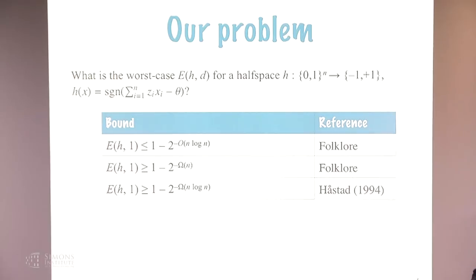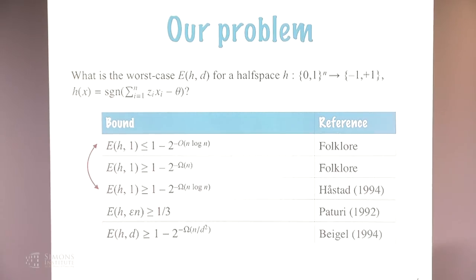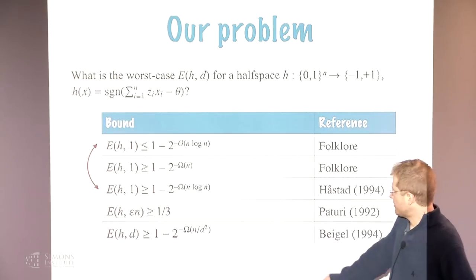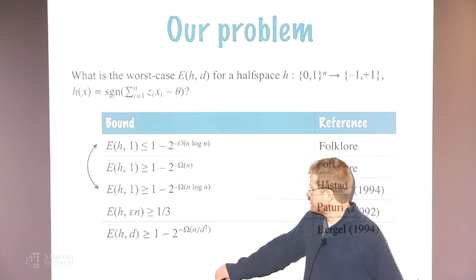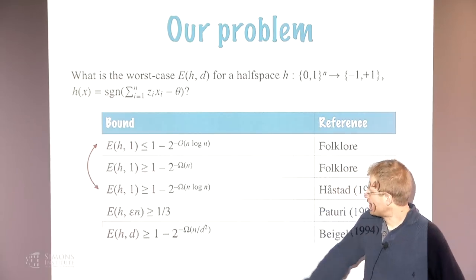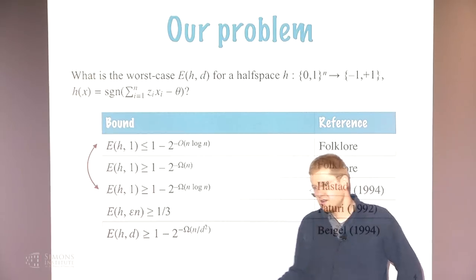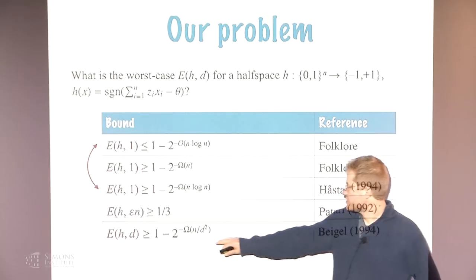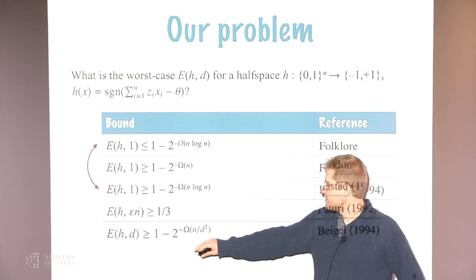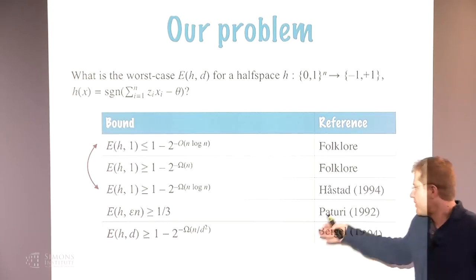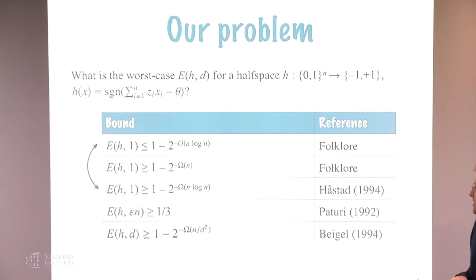This is essentially tight because you can round the coefficients such that their absolute values do not exceed n to the n, matching the trivial upper bound — though not quite, there is a logarithmic gap which Johan filled in with a much more subtle construction, definitively settling the gap even up to the multiplicative factor in the exponent. However, for larger values of d, the question remained wide open, with the state of the art giving two incomparable, fragmented lower bounds.